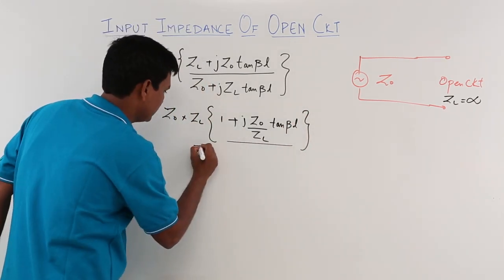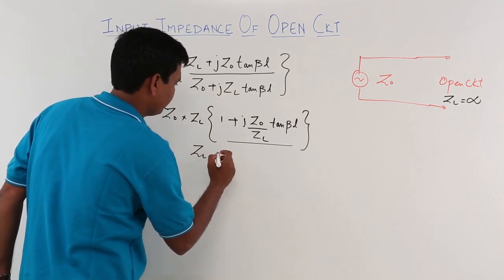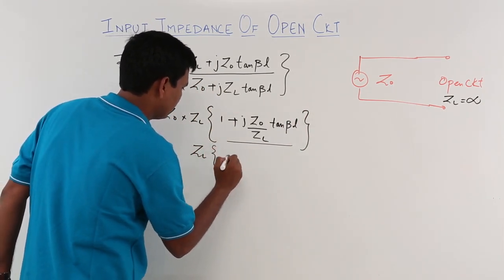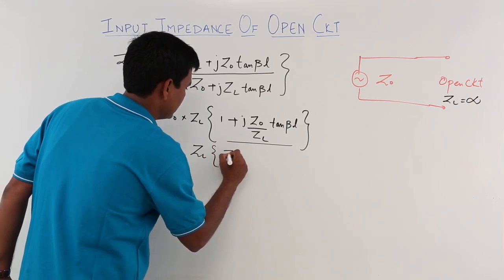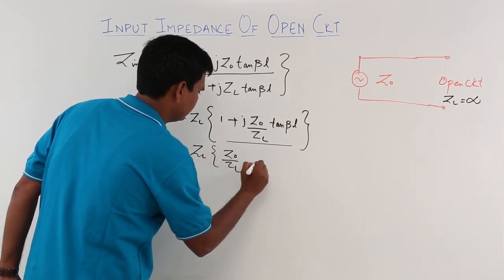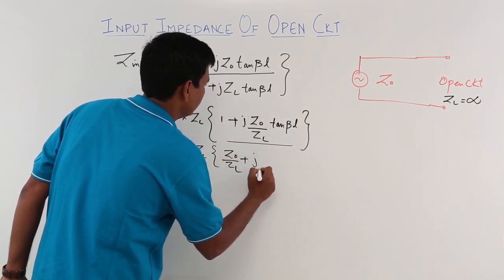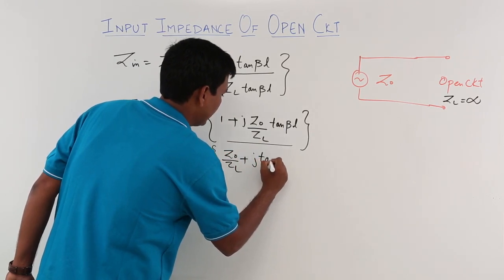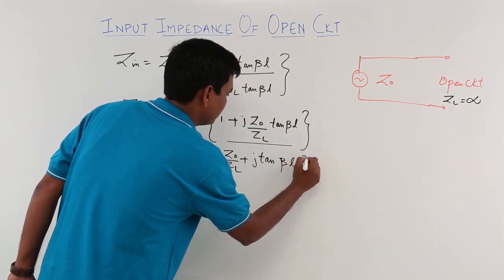again I will take Z L common here. So Z L common here also. It would be nothing but Z naught by Z L plus J tan beta L.